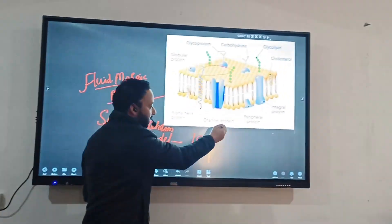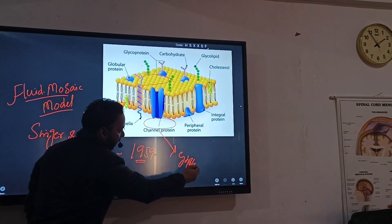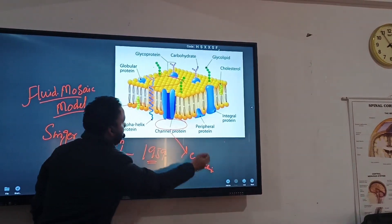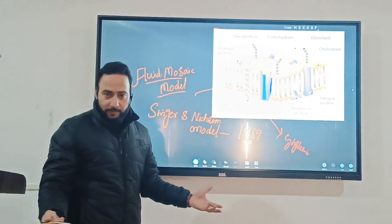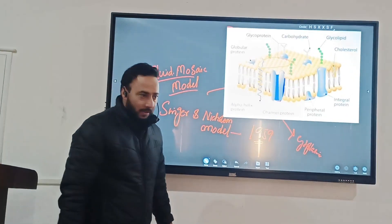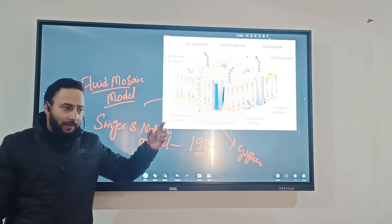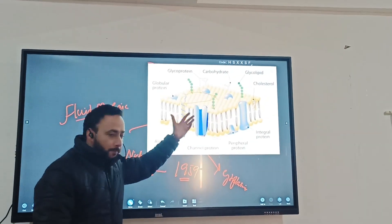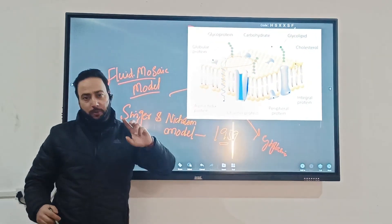This is the external surface of the membrane. This is the external surface here and the internal surface. This is the internal surface of the cell. We call this portion as the cytoplasm, we call this as a cytoplasmic side, and this portion is external side of the cell.